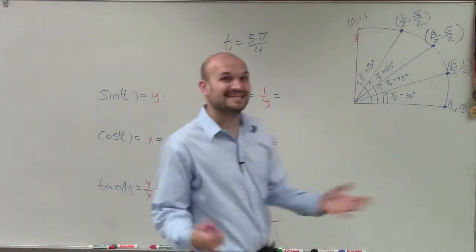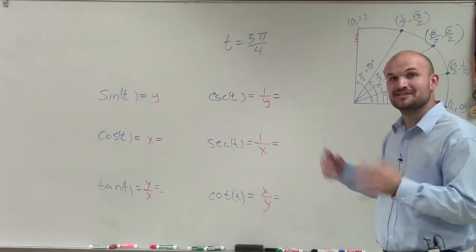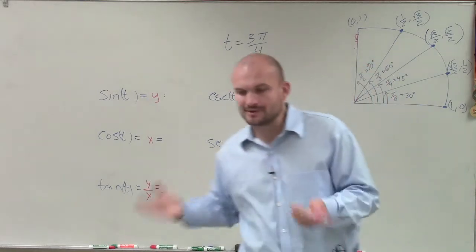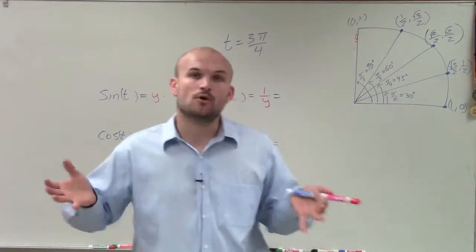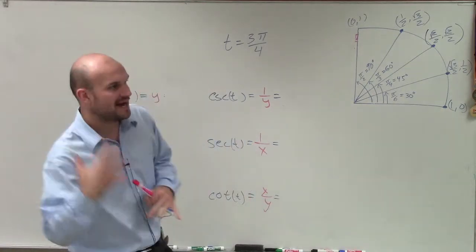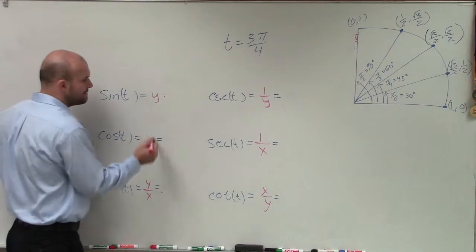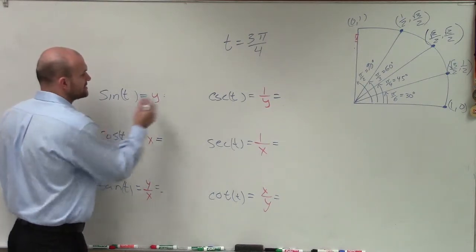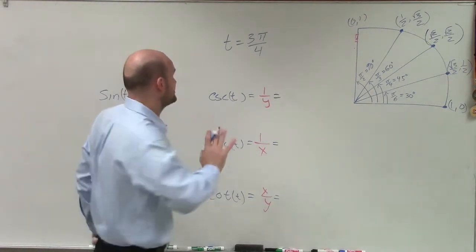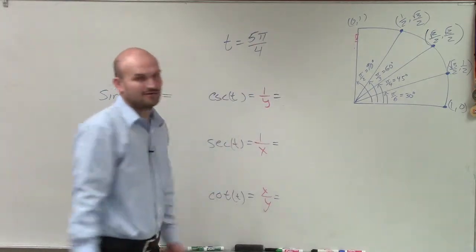Welcome. So what I have here is t equals 3 pi over 4. What I want to do is show you how to evaluate your six trigonometric functions given this angle. Actually, I've got to change this to 5 pi over 4. So what we're going to want to do is find where this angle is going to intersect our unit circle and determine that point.